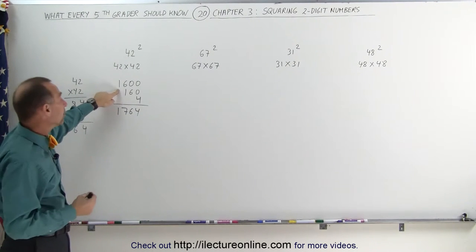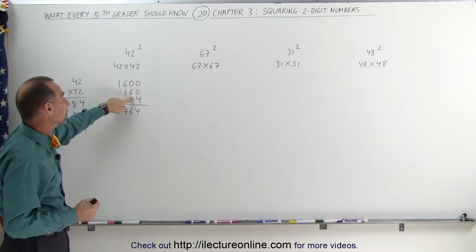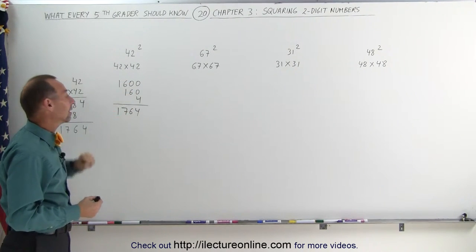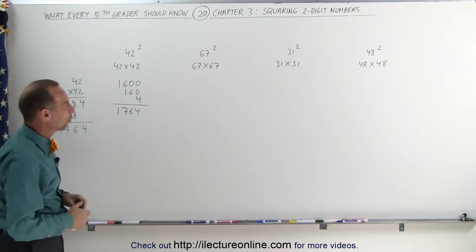Add 160 to the previous number you remembered, 1,600, that's 1,760. And then you go 2 times 2, which is 4. Add 4 more, you get 1,764.